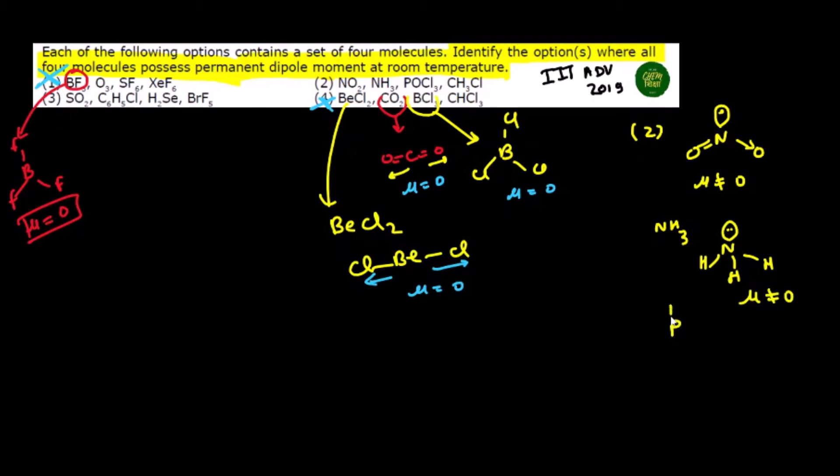POCL3, if you see POCL3, has a dipole moment that doesn't cancel to zero. Next, CHCL3, which is chloroform, is tetrahedral and has a dipole moment. So this option is correct.